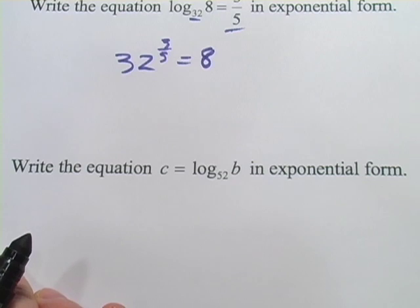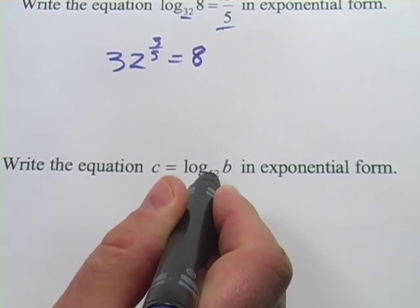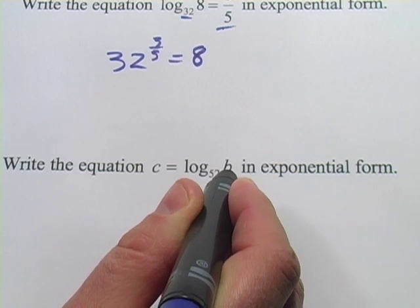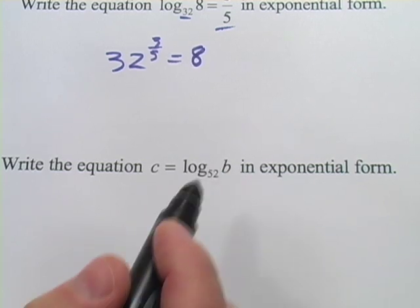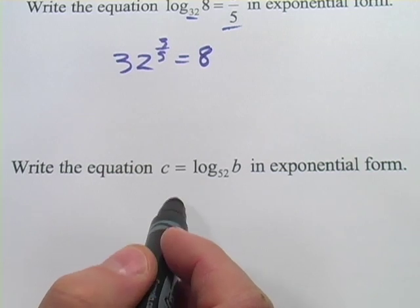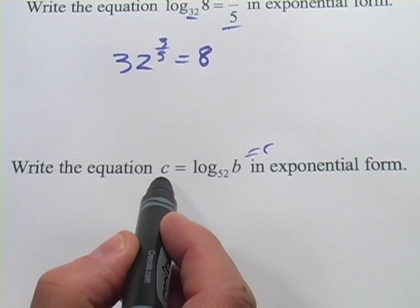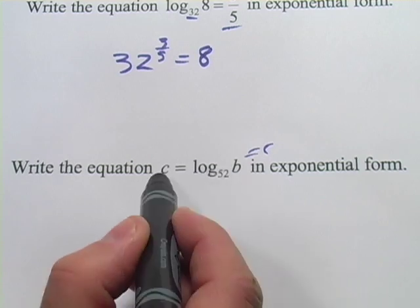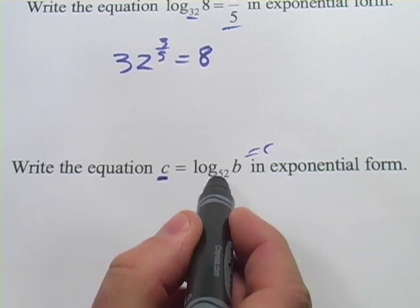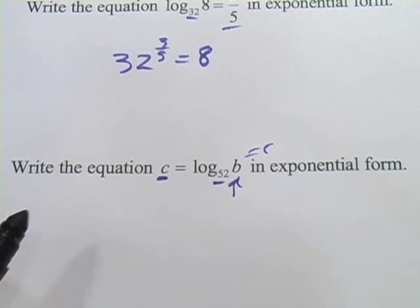All right, let's try one more. This one's maybe a little trickier because it says C equals log base 52 of B. They're doing two things here. One is they wrote the equation in the other direction, so instead of seeing the power over here, it's over here. But it doesn't really change anything. This is still the power, the base is still the number that's being raised to the power, and this B is still the result.